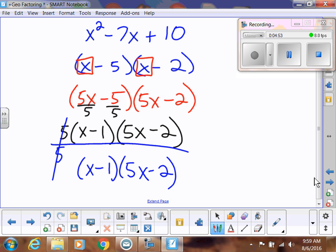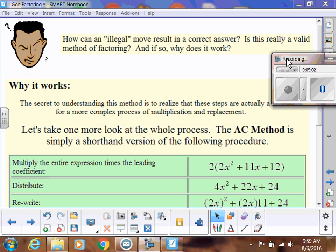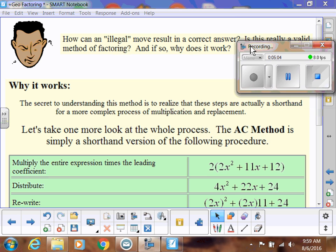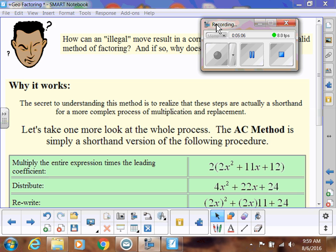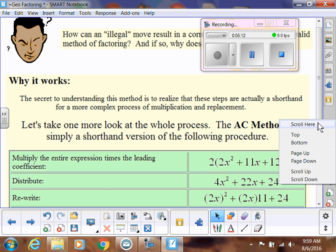So that's the AC method. Crazy, I know. It's math magic. Here's why. How can this illegal move result in a correct answer? Is this really valid? And if so, why does it work? Here's why it works.